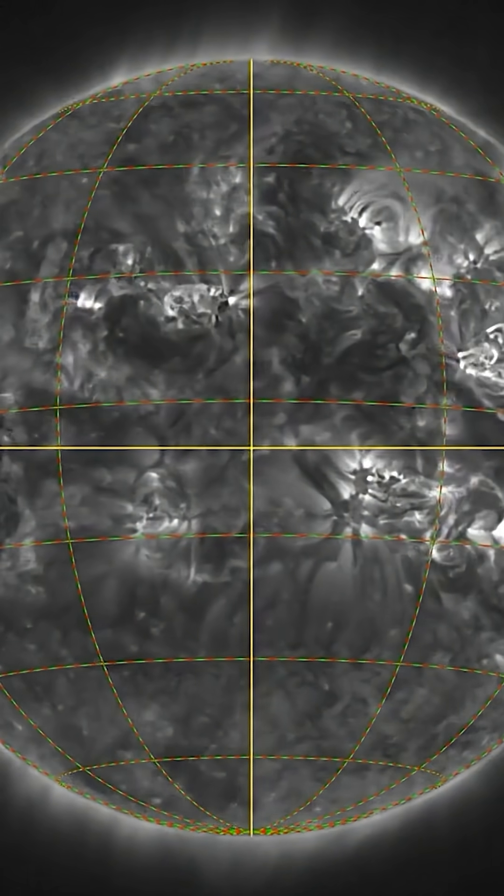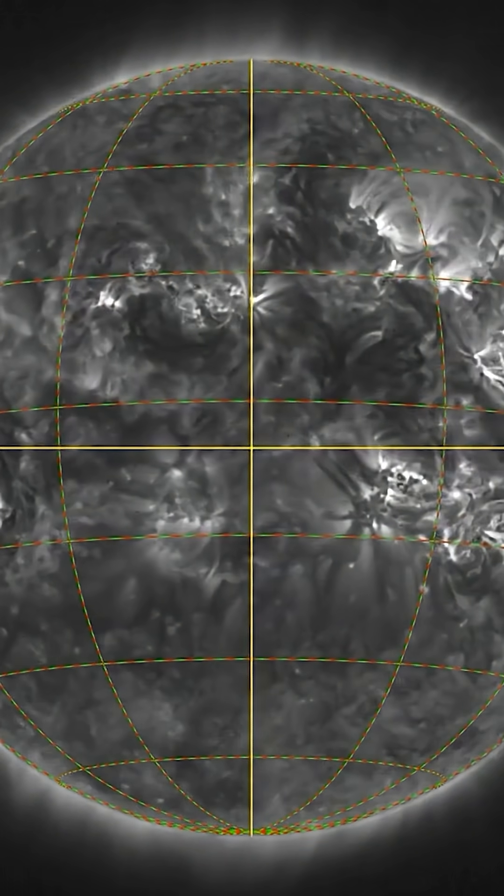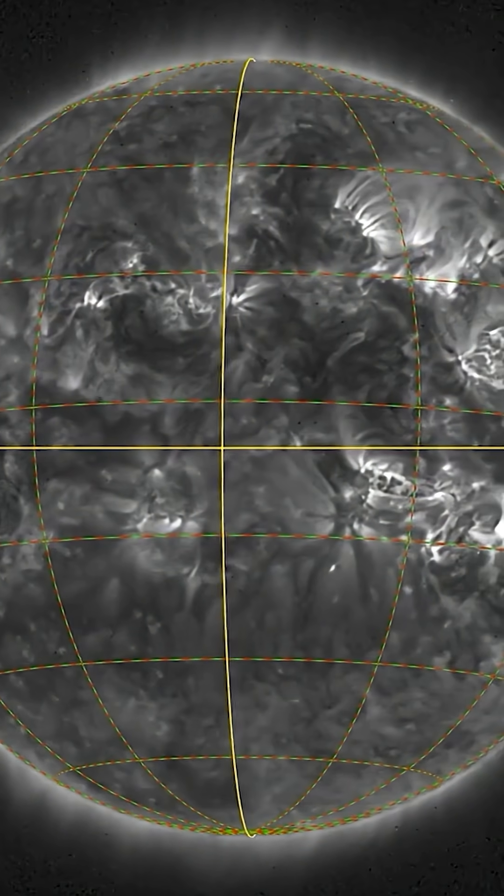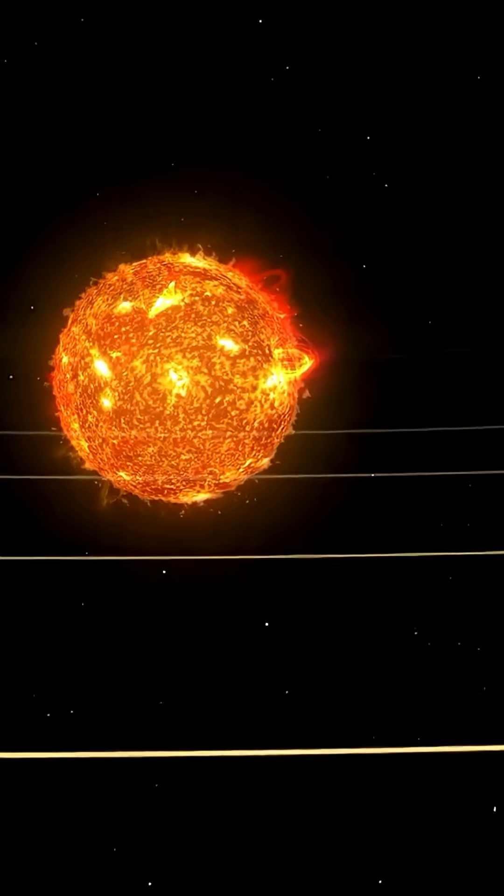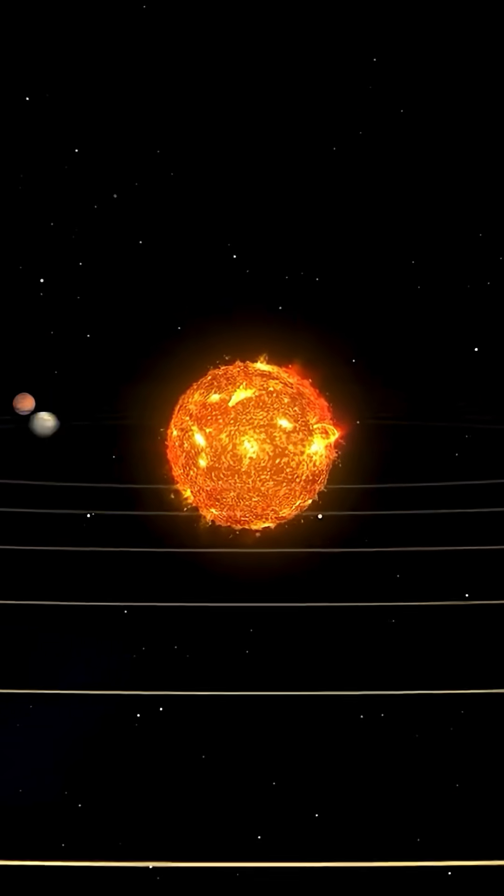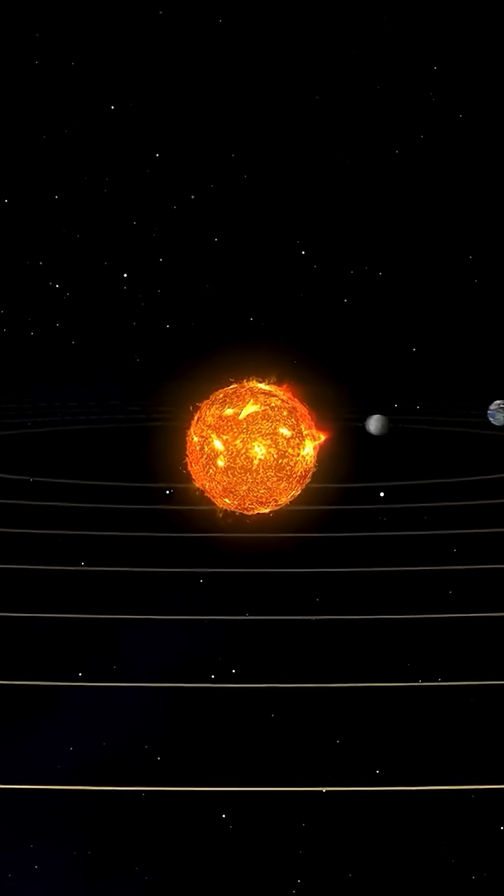Until now, every image of the Sun you've ever seen was taken around its equator. That's because Earth, the other planets, and most spacecraft travel in a flat orbit around the Sun.